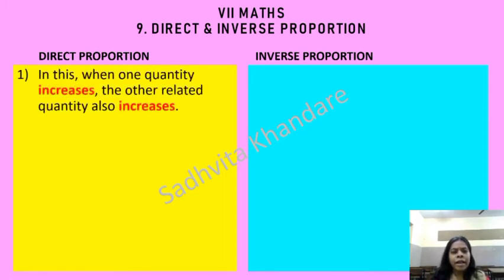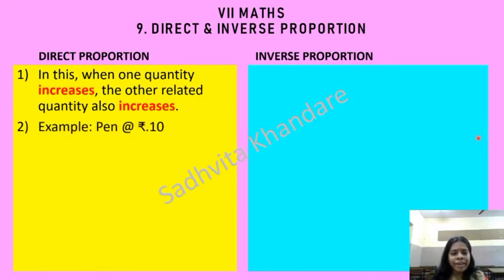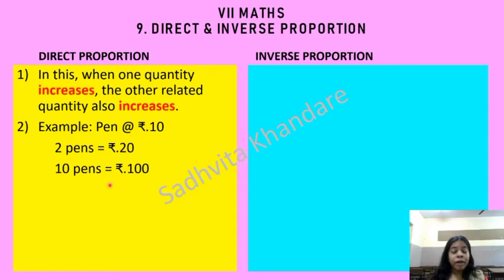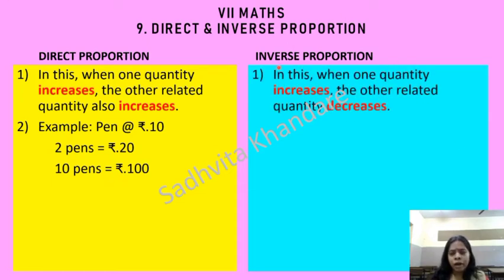In direct proportion, when one quantity increases the other related quantity also increases. For example, if one pen costs 10 rupees then two pens will cost 20 rupees. You have taken more pens so you pay more. If you take 10 pens it will become 100 rupees — when one quantity increases the other also increases.